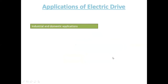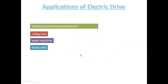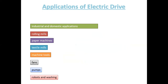Applications of the electrical drive include both industrial and domestic uses: rolling mills, trapper machines, textile mills, machine tools, fans, pumps, robots, and washing machines. Everywhere you find motors, you need speed controlling. Speed is controlled by converters, and converters are controlled by the control unit.